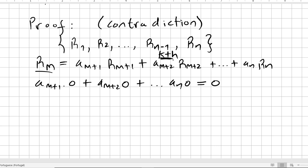But this contradicts the assumption that this one is not zero. So the Kth component, we said it's not zero, right? And so R1, R2, ..., Rm, they have to be independent.